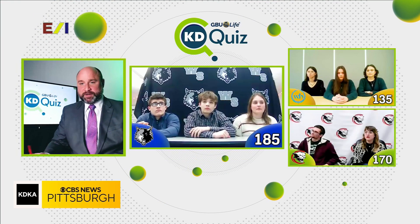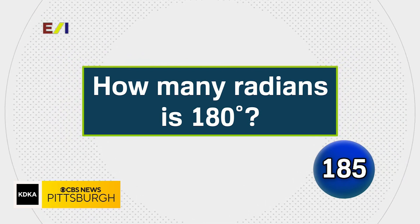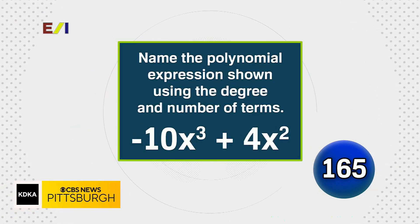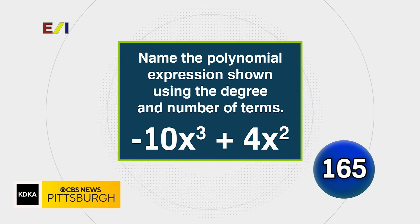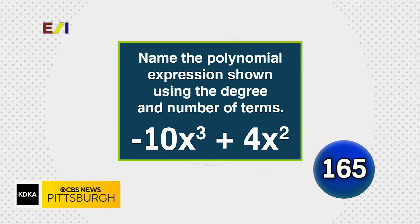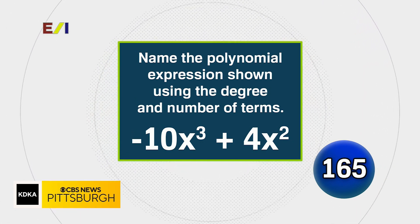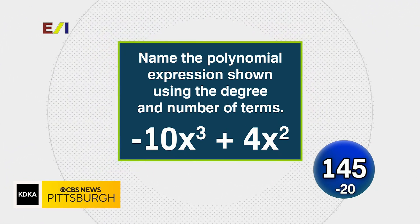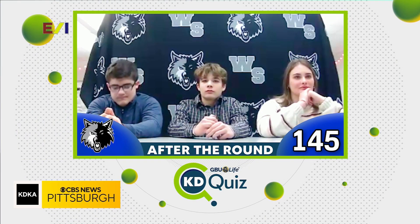And finally up, we have West Shamokin High School. Here's your first Math Time question. How many radians is 180 degrees? One. Pi radians was what we were looking for on that one. Name the polynomial expression shown using the degree and number of terms. Three and two. The judge would like you to clarify — we're looking for the polynomial expression name. It's to the third degree, there are two terms. We were actually looking for cubic binomial. So you got both incorrect, and West Shamokin, we had to take 40 points off your score, taking you down to 145.